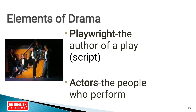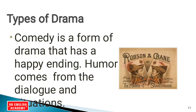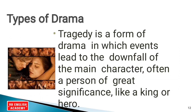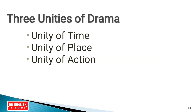The actors are the people who perform. In olden days there were two types of drama: comedy and tragedy. After the age of Shakespeare, tragicomedy was introduced. Comedy is a form of drama that has a happy ending; humor comes from the dialogue and situations and it is created for entertainment. Tragedy is a form of drama in which events lead to the downfall of the main character — often a person of great significance like a king or hero — and most main characters end up dead.